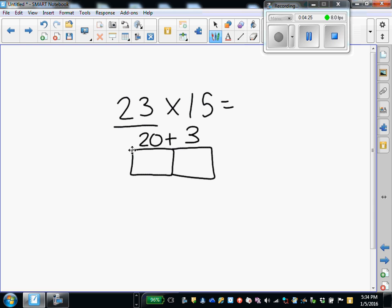So 15 is made up of 10 and 5 ones. And I'm just going to come down and draw two more boxes. So I'm going to multiply 10 by 20, 10 by 3. I'm going to multiply 5 by 20 and 5 by 3. Remember, area models help us multiply each place value by what it needs to be multiplied by. So, start off with the top row.